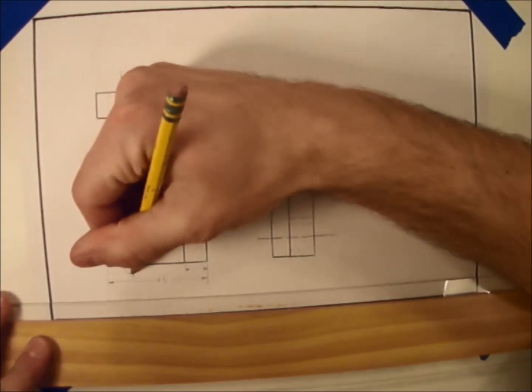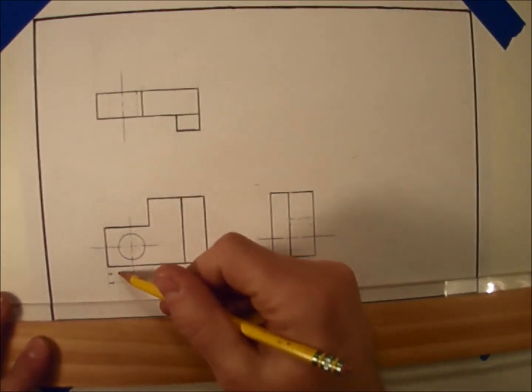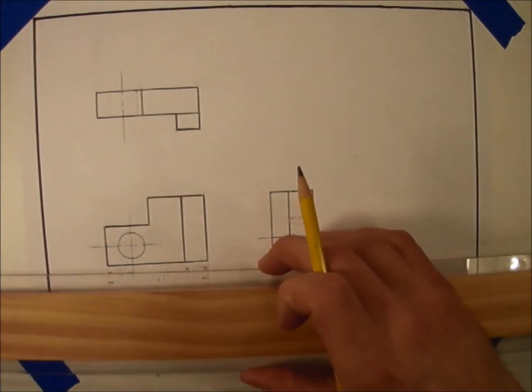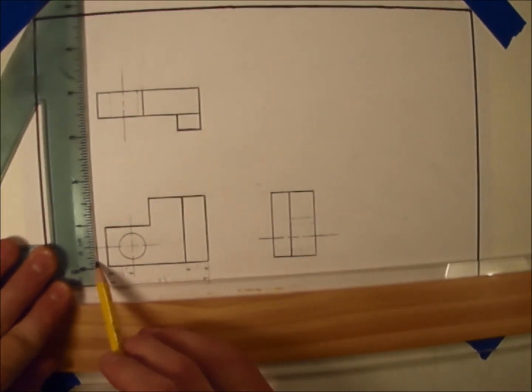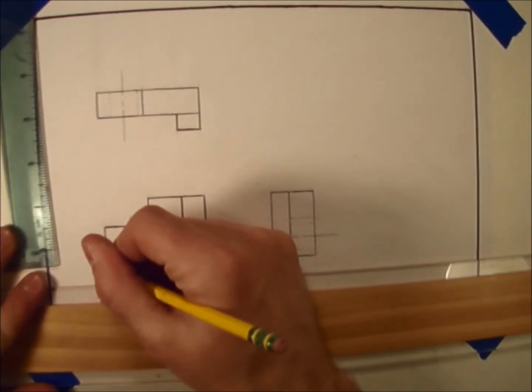When it's time to dimension and we need to show where a hole is placed on a drawing, we show dimensions to the center lines like this. This lets us know where the hole should be placed in relation to a corner of the object.